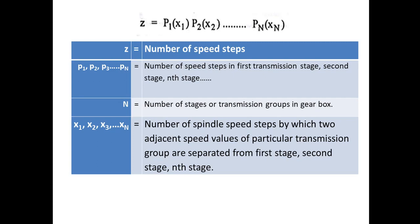Capital N is number of stages or transmission groups in gearbox. Suppose there is a 6 speed 2 stage gearbox then number of stages are 2. There is 9 speed 3 stage gearbox then number of stages are 3. X1, X2, X3, Xn are the number of spindle speed steps by which two adjacent speed values of particular transmission group are separated from first stage, second stage, nth stage.